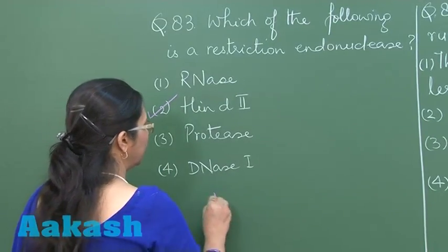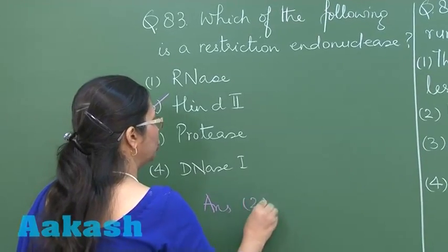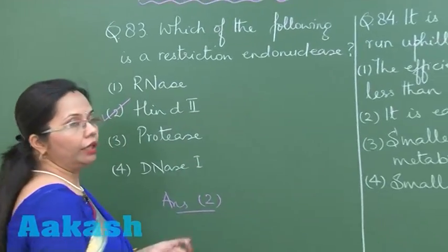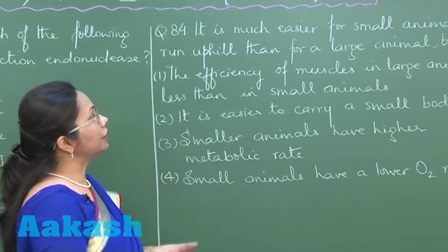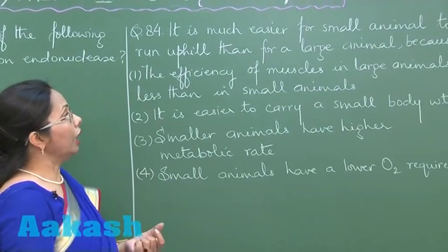So the answer is 2. Next question, Question 84: It is easier for a small animal to run uphill than for a larger animal because...